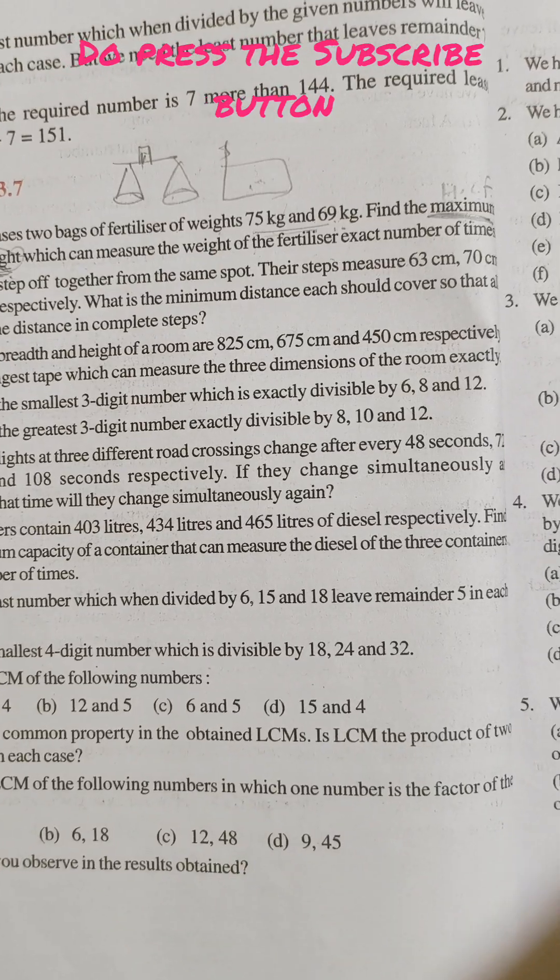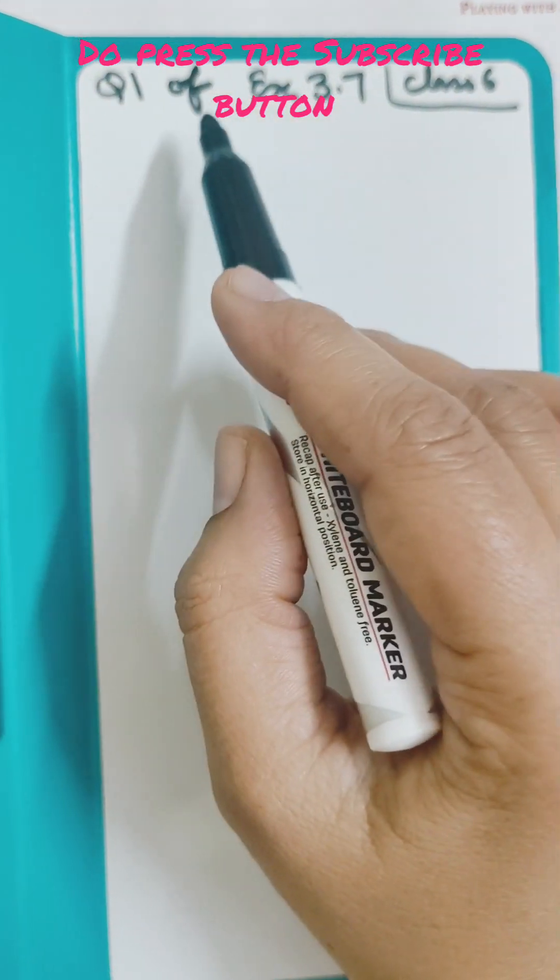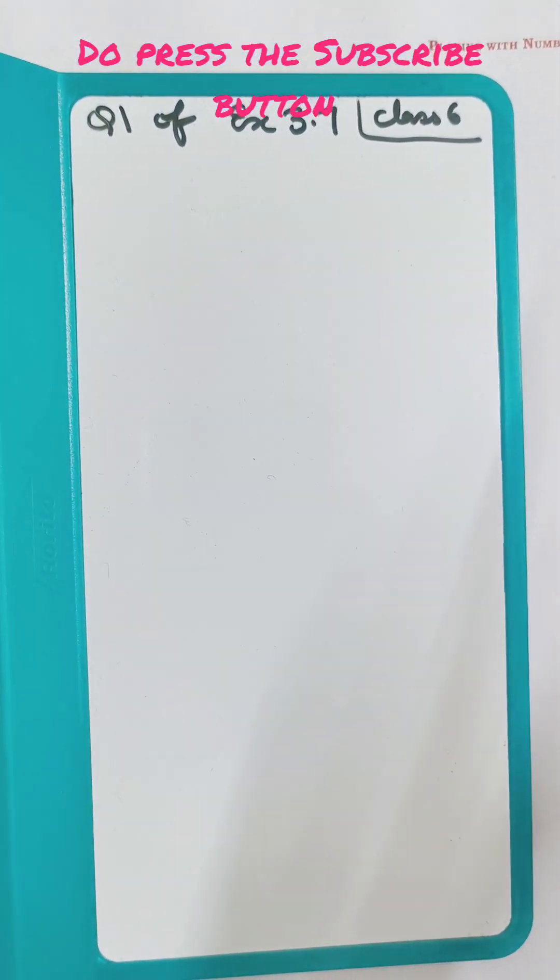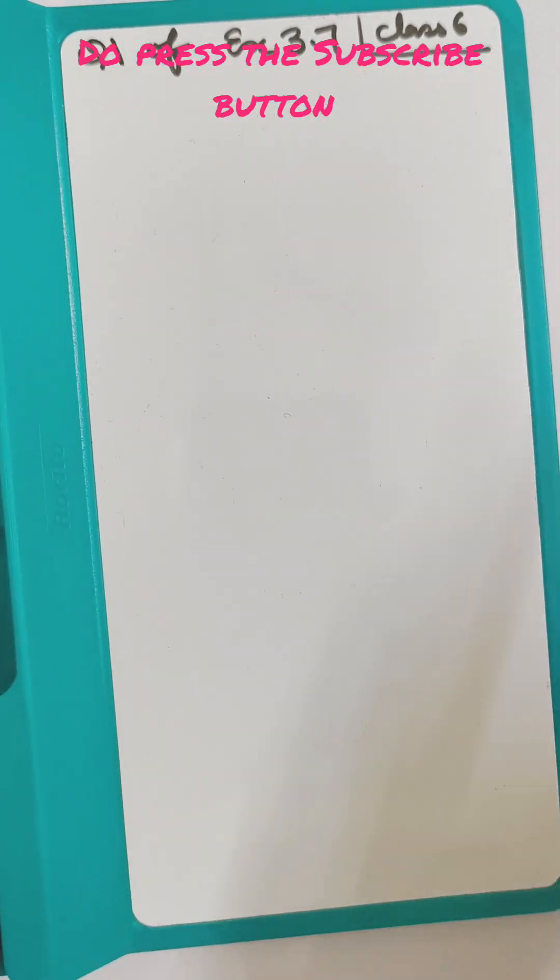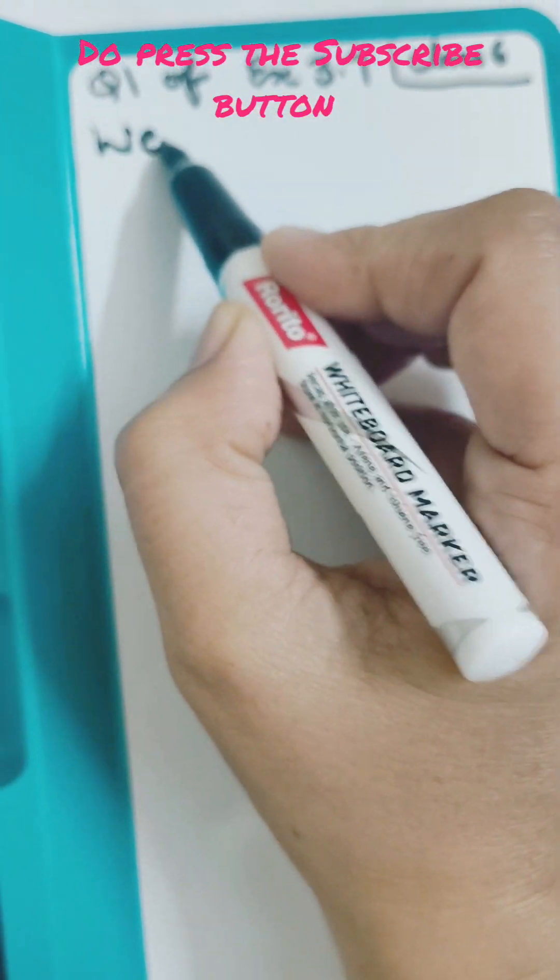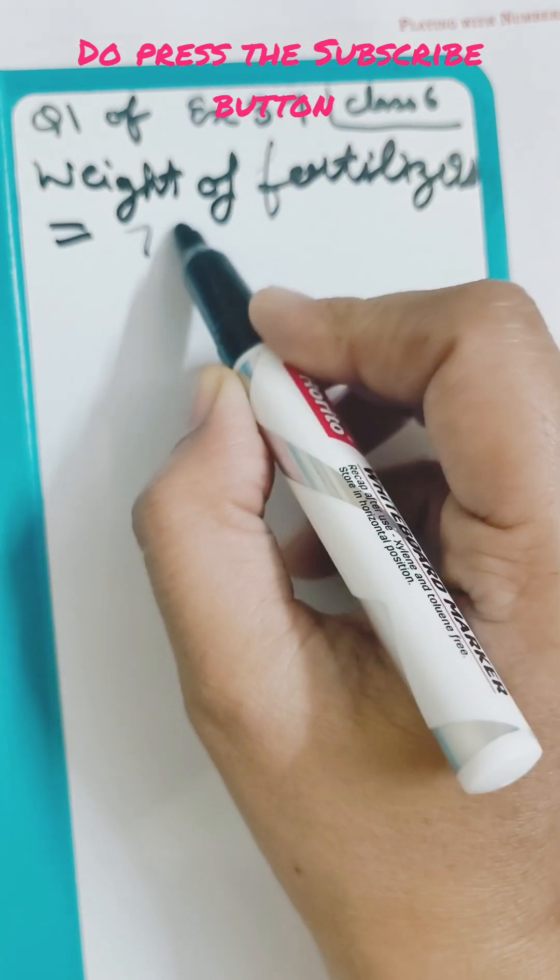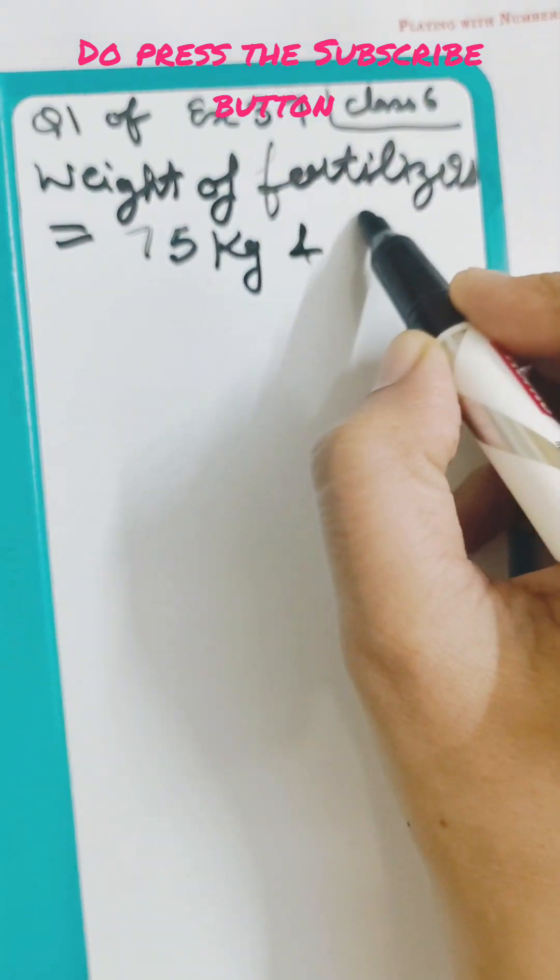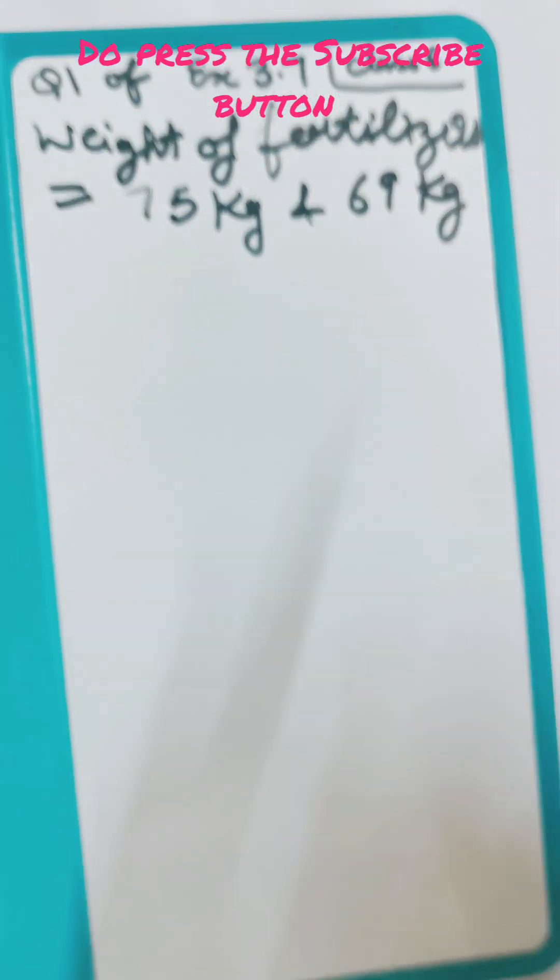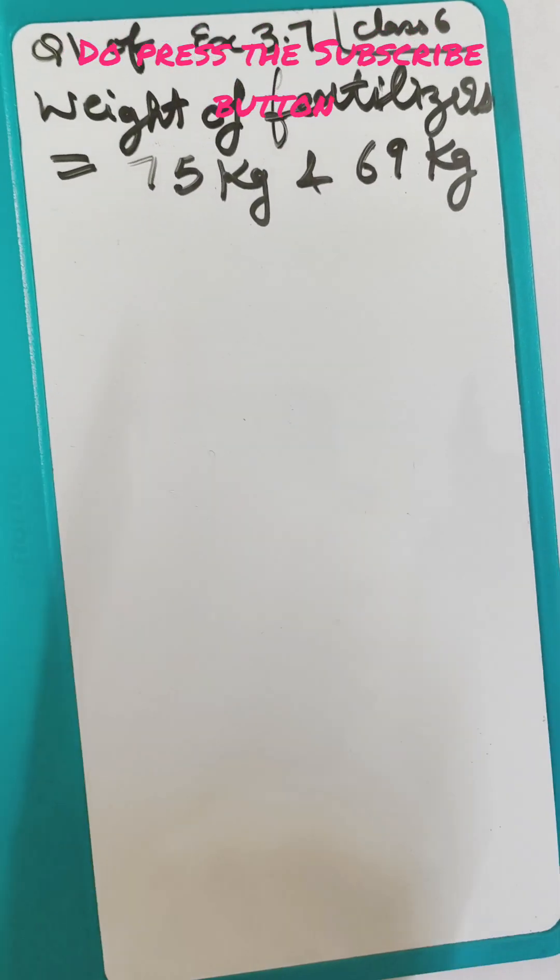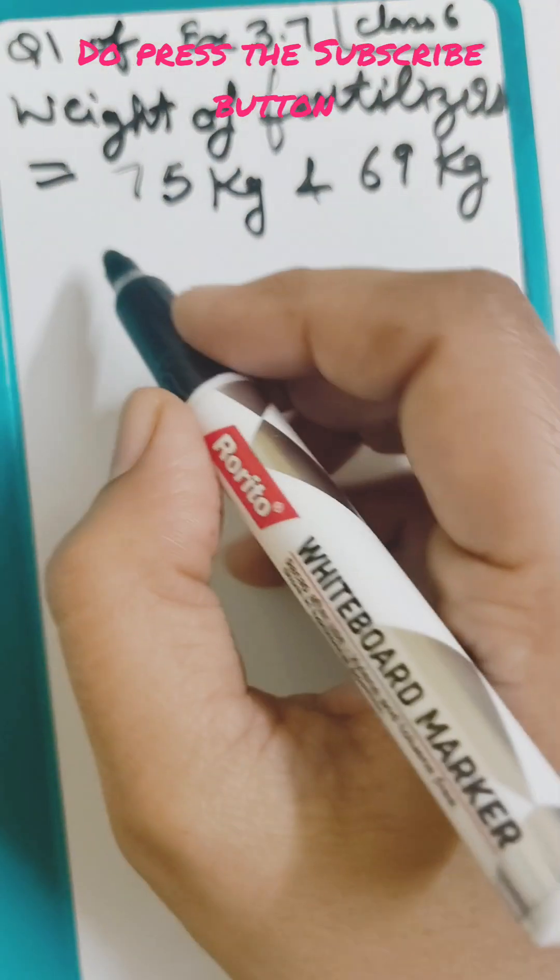So let's start this question. I am going to do question number 1 of Exercise 3.7, Class 6 Maths. First, we will write weight of fertilizer is equal to 75 kg and 69 kg. We want to find HCF. To find the exact weight, we will find HCF. The easiest way is by division.